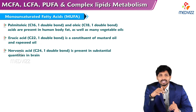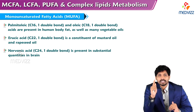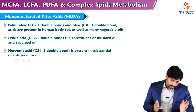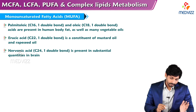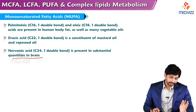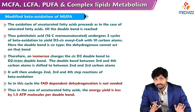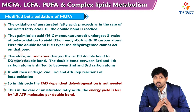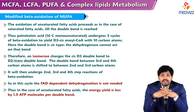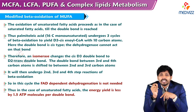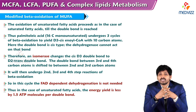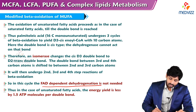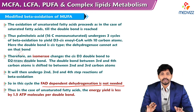Next are monounsaturated fatty acids — 'mono' meaning single, so there is a single double bond. Palmitoleic acid and oleic acid are present in the human body and in vegetable oils. Erucic acid is a constituent of mustard oil or rapeseed oil, and nervonic acid is present in substantial quantities in the brain. The oxidation of unsaturated fatty acids proceeds like saturated fatty acids until the double bond is reached. Palmitoleic acid undergoes three cycles of beta oxidation to yield Δ3-cis-enoyl-CoA with 10 carbons. Since the double bond is cis type, the dehydrogenase cannot act on it; therefore an isomerization occurs, shifting the Δ3 double bond to a Δ2 trans double bond, and the molecule then undergoes the second, third, and fourth steps of beta oxidation.